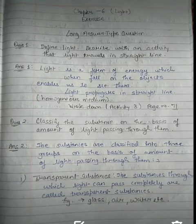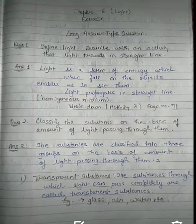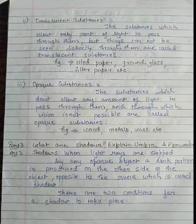This is a substance where light completely passes. Examples are air, water, etc. Now students, the second is translucent substance.